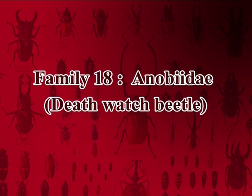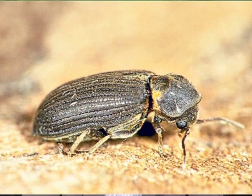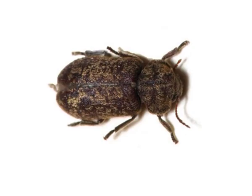Eighteenth family is Anobiidae or death watch beetle. They are cylindrical or oval, reddish or dark brown; head is concealed by large pronotum. Body is covered by hairs; hind coxal cavity is deep. They are destructive pests of stored products. Example: the drugstore beetle, scientifically called Stegobium paniceum.